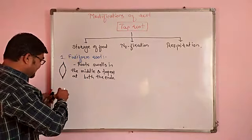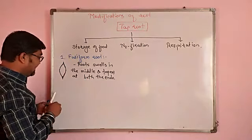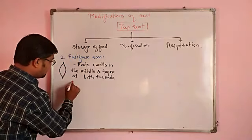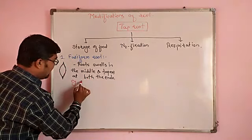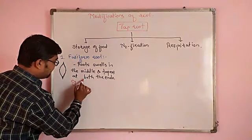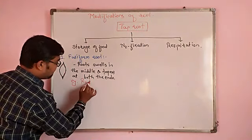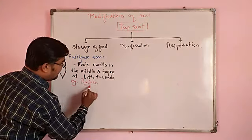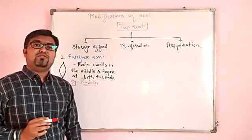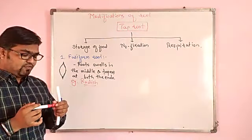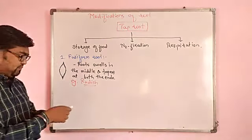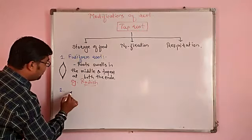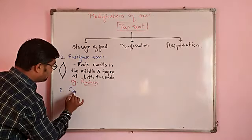The example for fusiform roots is Radish. So Radish is the example for fusiform roots. Next, we will look at conical roots.